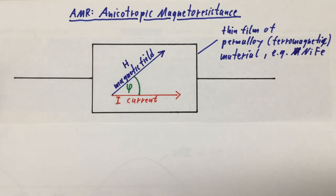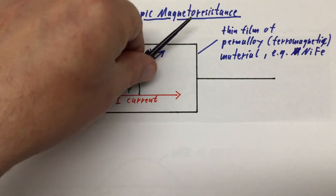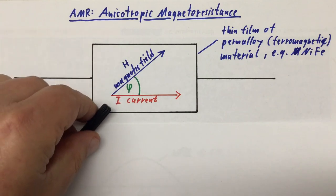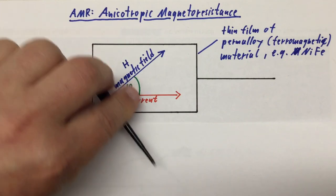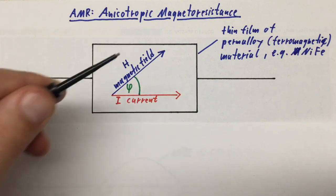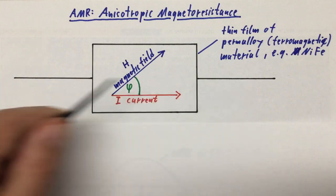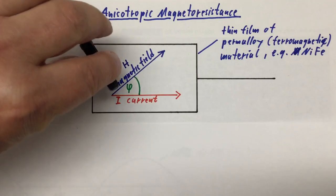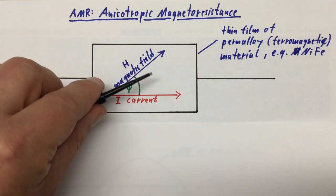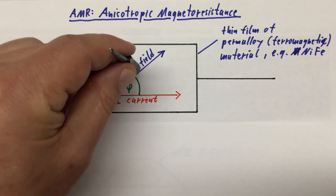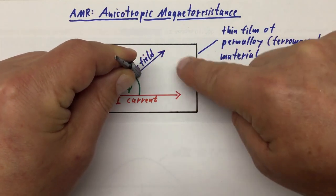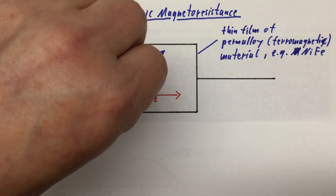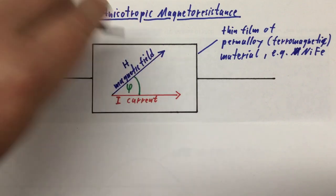If the magnetic field is at a 90 degree angle to the current or a 270 degree angle to the current, you get a maximum decrease of the resistance. Again, the direction of the magnetic field lines really doesn't matter. Finally, if the magnetic field lines are at a 45 degree angle, a 135 degree angle, a 225 degree angle or a 315 degree angle to our current, we observe no change in the resistance. Again, the direction of the field lines doesn't really play any role.